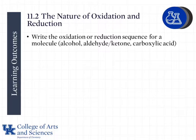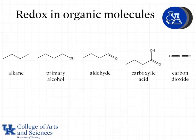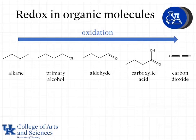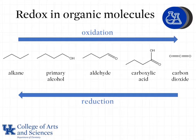In this lesson we are going to examine the oxidation and reduction sequence for some organic molecules. When we look at redox reactions in organic molecules, we start to see some patterns emerge. Going from an alkane all the way up to carbon dioxide contains several oxidation reactions. Conversely, going from CO2 to an alkane are reduction reactions. Note that oxidation and reduction are opposite processes from one another — for example, going from a primary alcohol to an aldehyde is an oxidation, and going from an aldehyde to a primary alcohol is a reduction.